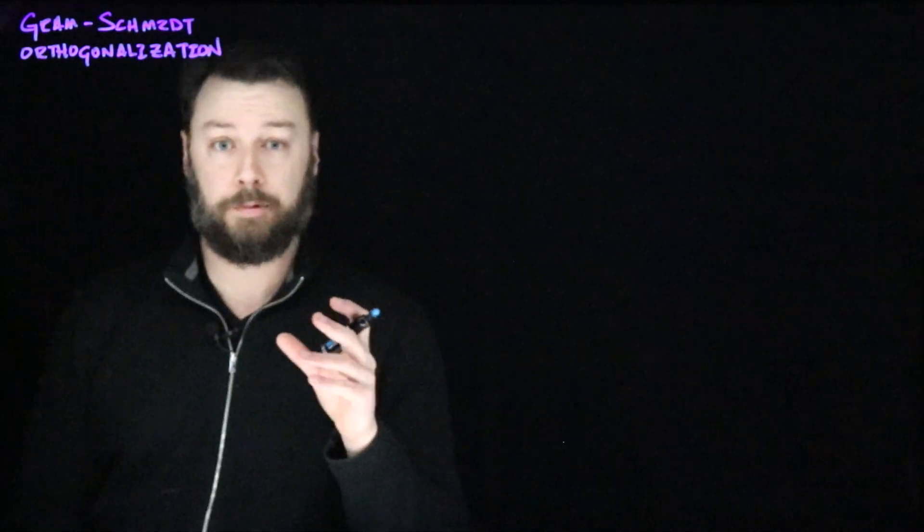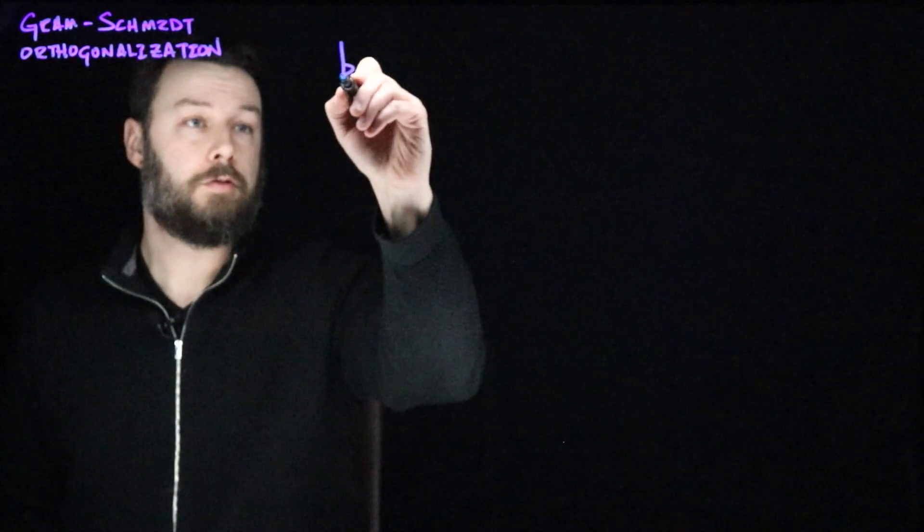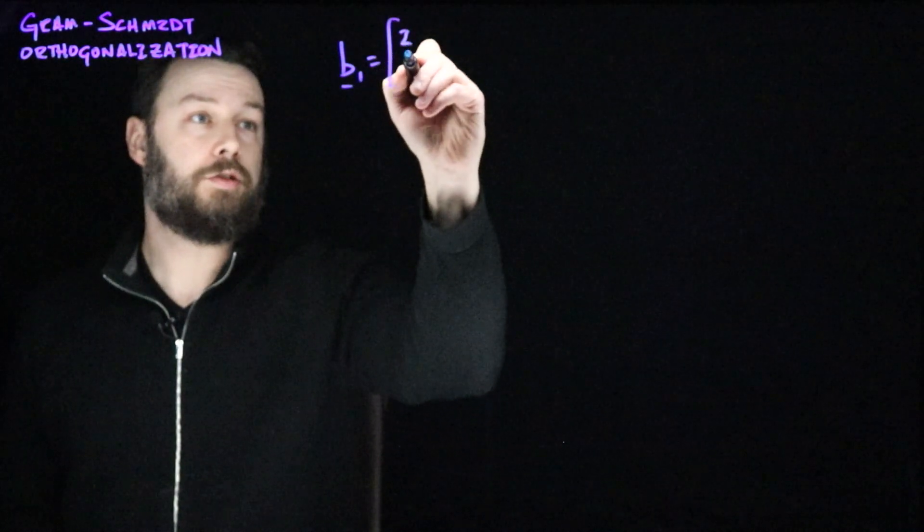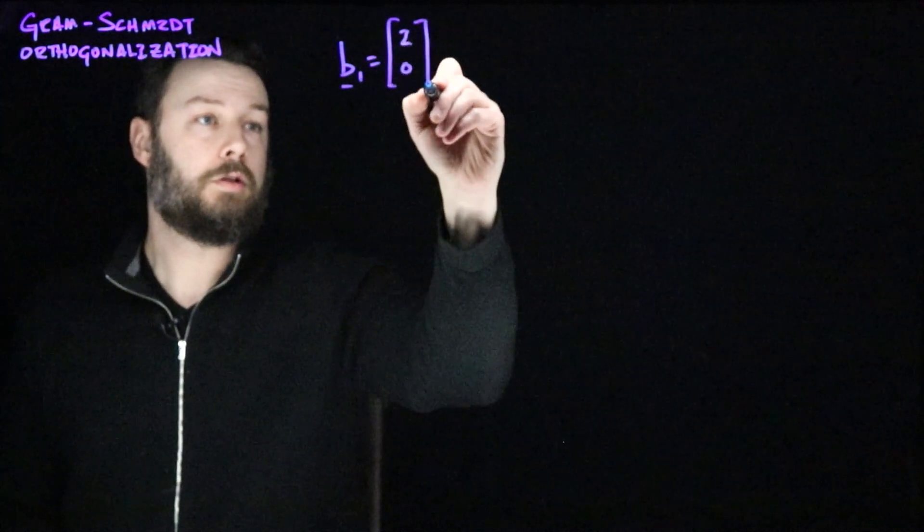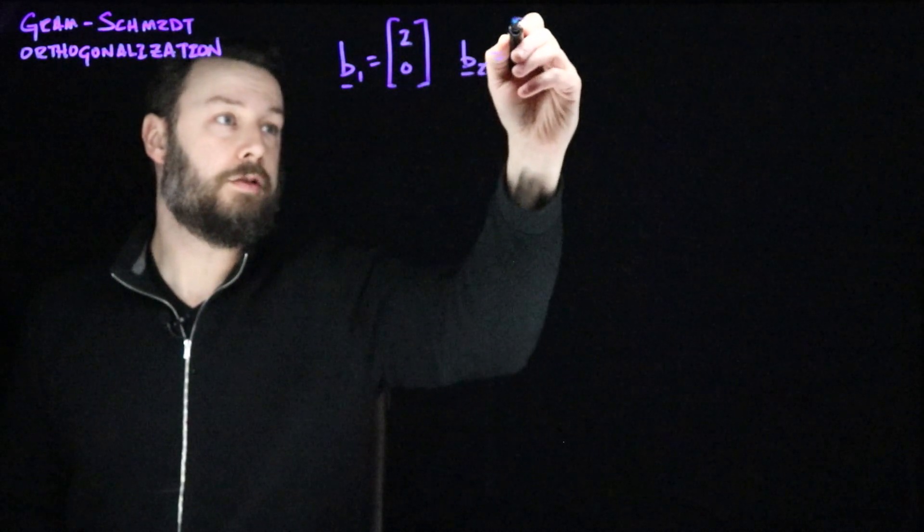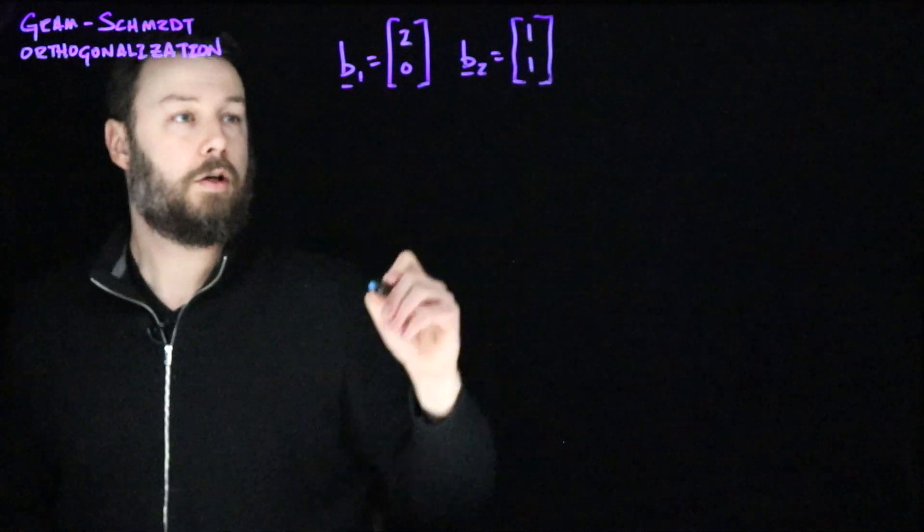So now let's do a simple example just to give a feel for it. Let's imagine that we have a b1 that is, say, 2, 0, and a b2 that is, let's say, 1, 1.